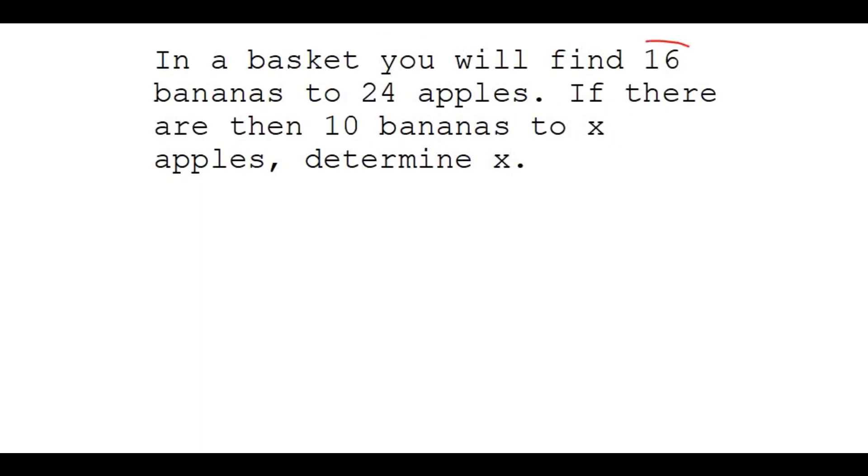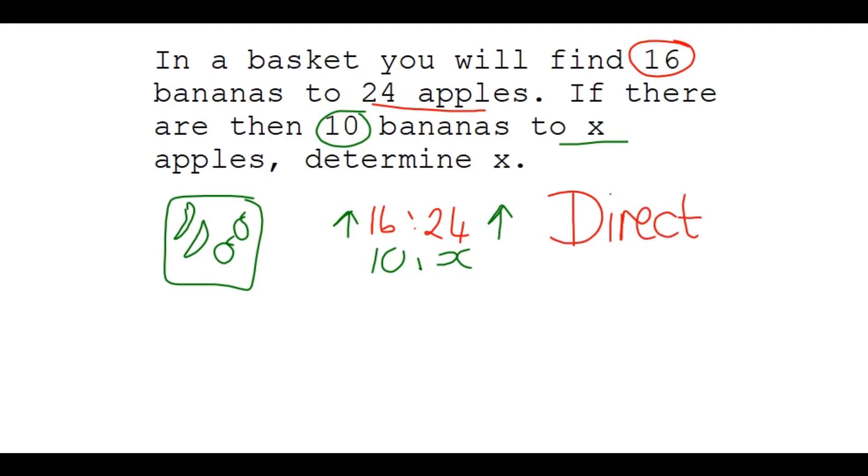And then in this last example, you will find 16 bananas to 24 apples. I'm going to write that down as a ratio. And also, if then there are 10 bananas to x apples, determine x. So 10 bananas to x apples. Now remember, this could be in a package. They're selling it as a package. And there's your apples, and there's your bananas. And now, if I increase the number of bananas, I have to increase the number of apples. Or if I decrease the number of bananas, I'm going to have to decrease the number of apples, so that they can stay in the same ratio. So this then tells me this is a direct relationship. And the apples and bananas are in direct proportion.